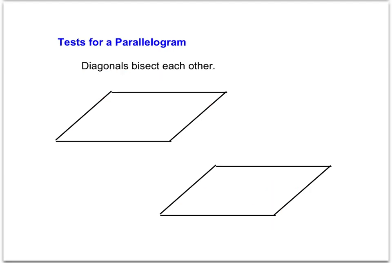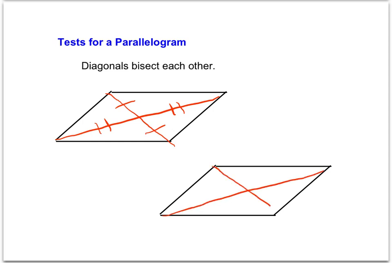The next test talks about diagonals. You can draw the diagonals in, and you need to see that the two segments of one diagonal are congruent, and then that the two segments of the other diagonal are also congruent. Just like with sides and angles, we can be given this information with congruency marks or with specific measures. In both cases, if the diagonals bisect each other, then it is a parallelogram.